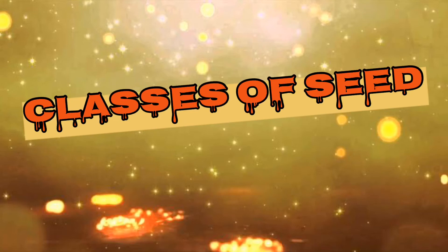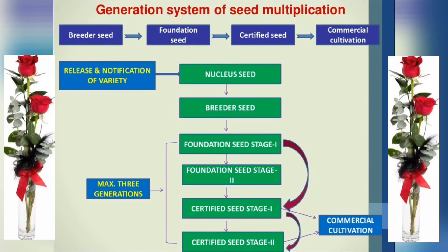The next topic is the generation system of seeds, also called classes of seeds. In India, a three-generation system is followed: breeder seed, foundation seed, and certified seed. Nucleus seed and registered seed generations are not followed in India. Foundation seed has two stages — Foundation Seed 1 (produced from breeder seed) and Foundation Seed 2 (produced from Foundation Seed 1). Certified seed also has two stages — Certified Seed Stage 1 (produced from Foundation Seed 1) and Certified Seed Stage 2 (produced from Certified Seed Stage 1).